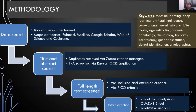The various citations were imported into the Zotero citation manager where duplicates were removed, followed by title and abstract screening via the Rayyan QCR web-based application. Full-length text screening was then performed keeping in mind the inclusion and exclusion criteria as well as the PICO criteria defined for this study. Data extraction was done, and a risk of bias analysis was performed using the QUADAS-II tool, followed by a qualitative analysis.